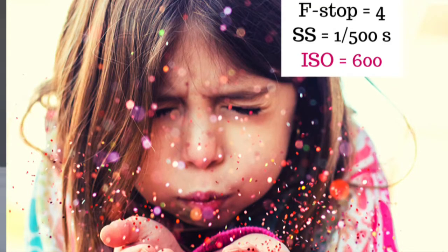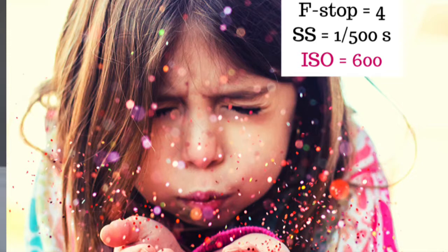Here's an example: in this picture I wanted a low f-stop number so I could get some background blur. I also needed a super fast shutter speed so that the glitter didn't look like blur moving across my camera — I wanted the glitter to be clearly seen. But it was a dark evening, so I had to bump my ISO to 600. That gave me the exact picture that I wanted.